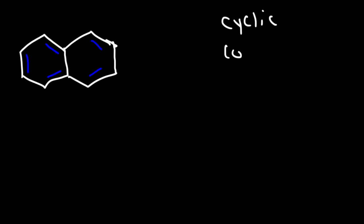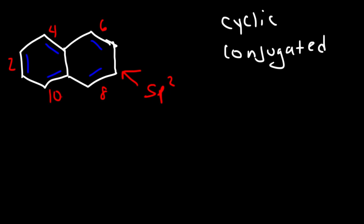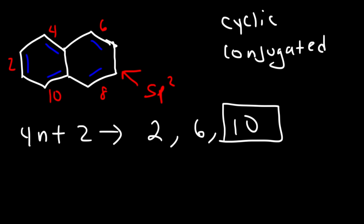Here's another example: naphthalene. It has two rings. Is it aromatic, anti-aromatic, or non-aromatic? We can see that it's cyclic, conjugated with alternating single and double bonds, and all carbon atoms are sp2 hybridized. Let's count the pi electrons: 2, 4, 6, 8, 10. So this follows Hückel's rule of 4n+2. Since we have 10 pi electrons and all conditions for aromaticity are met, naphthalene is an aromatic compound.